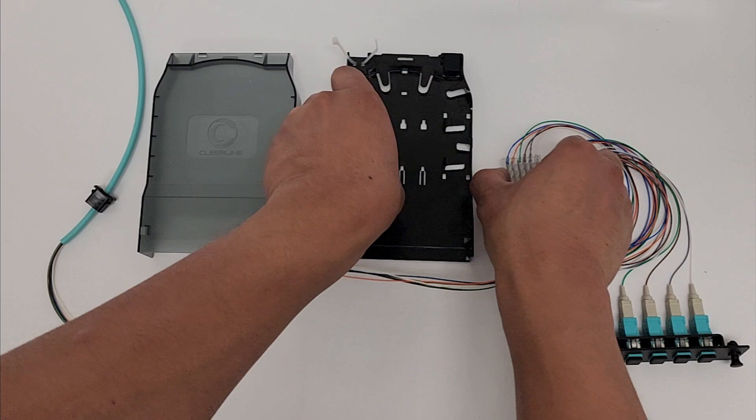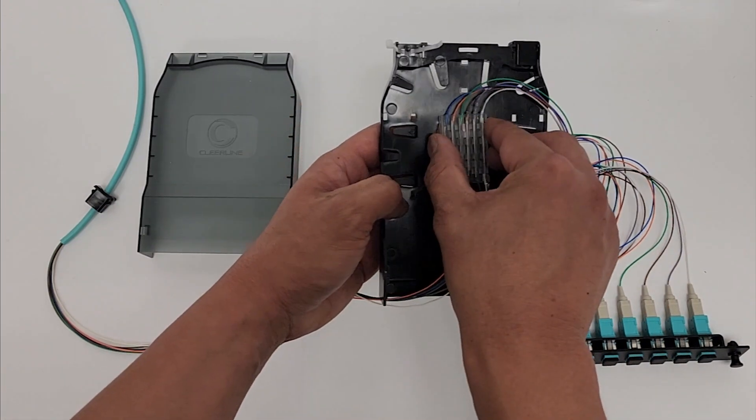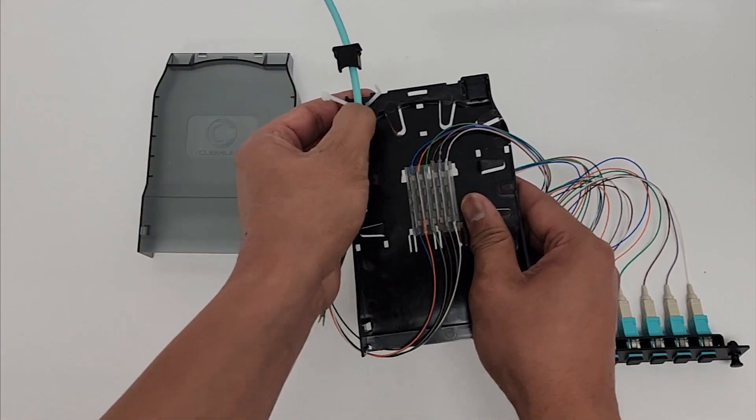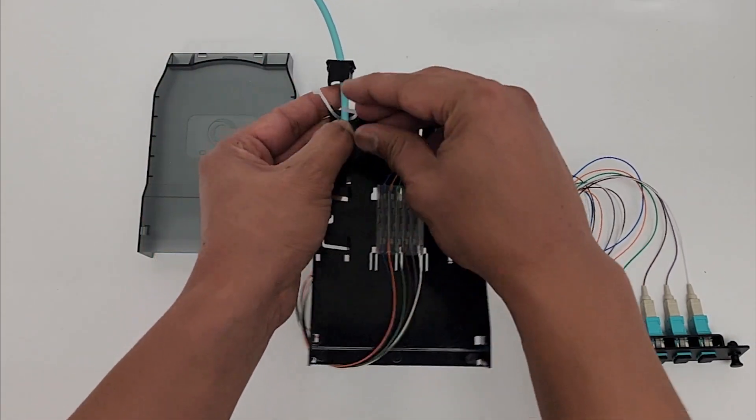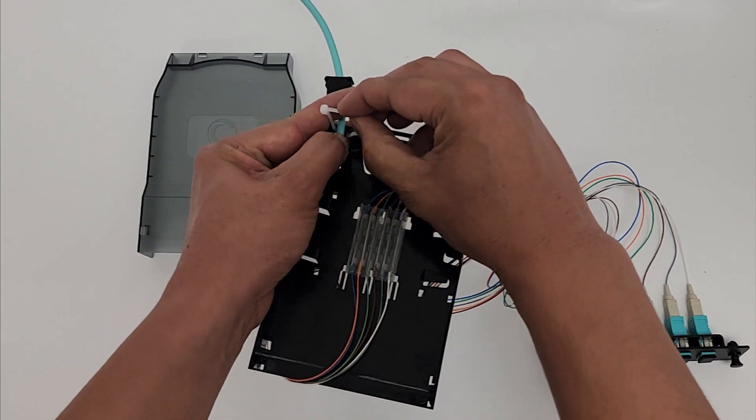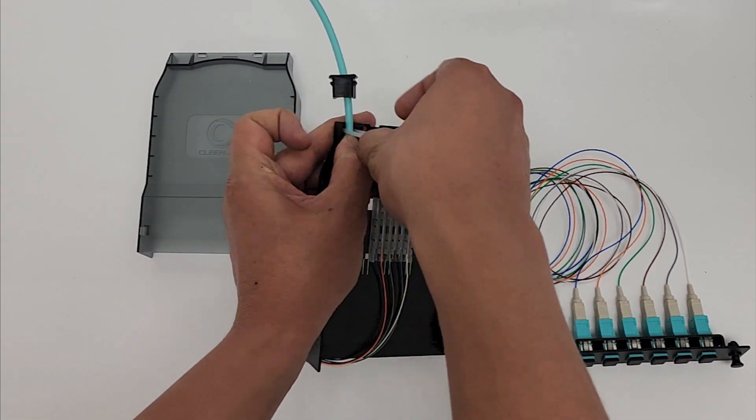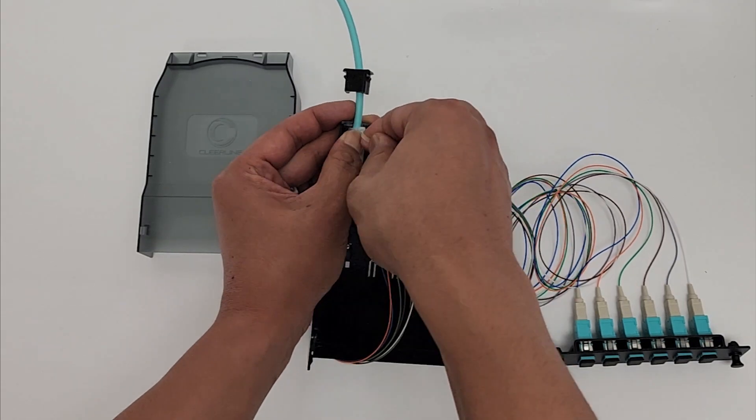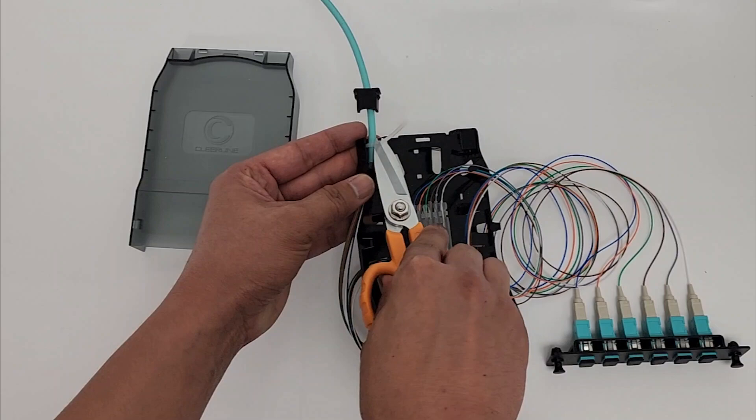Next, install the splice tray onto the bottom housing. Ensure the pigtails exit the splice tray towards the rear and the incoming fiber towards the adapter plate position. Now, secure the incoming fiber with zip tie, taking care not to overtighten, and route the incoming fiber clockwise.